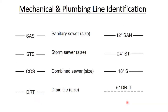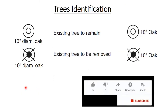Then we have mechanical and plumbing line identification. Sanitary sewers are represented by the symbol SAS, and you can mention size, for example, 12-inch SAS. Storm sewer is represented by STS, for example, 24-inch STS. Combined sewer combining both storm and sanitary is represented by COS, for example, 18-inch COS. Drain tile also has its symbol, and you can mention the size, for example, 6-inch drain tile.